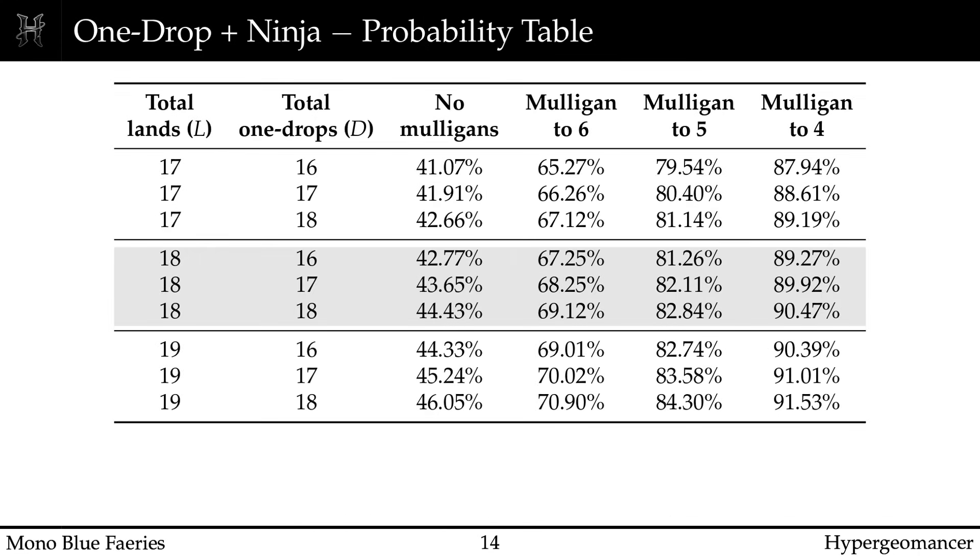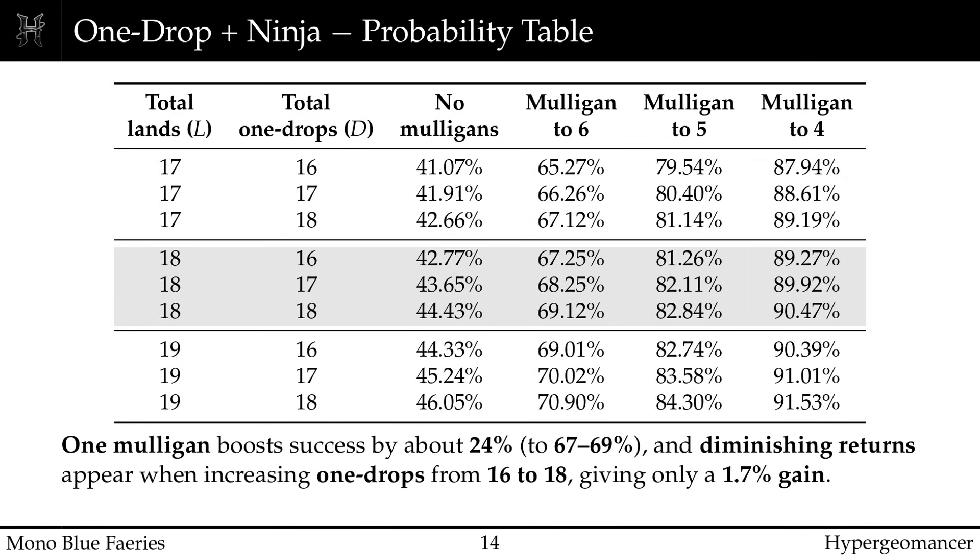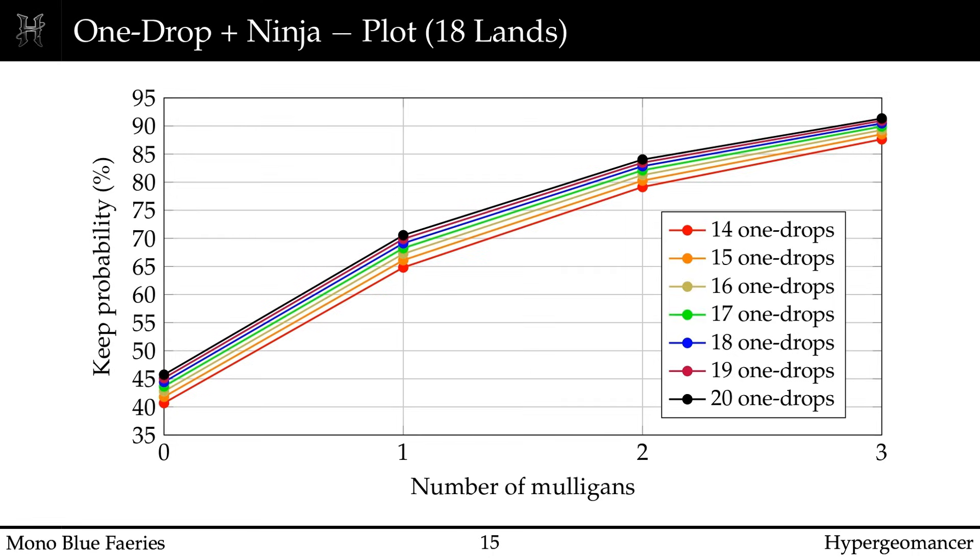Now let's talk about threat density. Increasing from 16 to 18 one-drops only improves your no-mulligan probability by about 1.7 percentage points. Even pushing to 20 one-drops gains only a few percent total, at the cost of interaction and late-game power. The sweet spot is 16 to 18 one-drops, beyond that, returns diminish rapidly. The plot makes this clear. Mulligans matter far more than stuffing extra one-drops into the deck. Consistency comes from decision-making, not overloading your list.